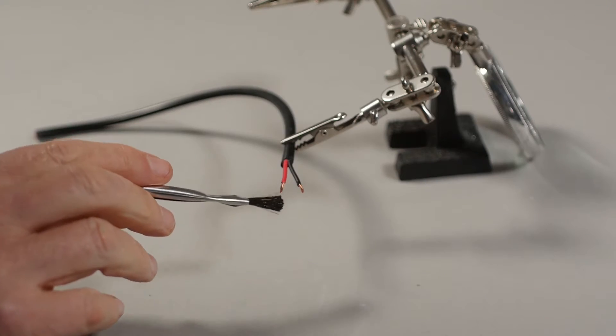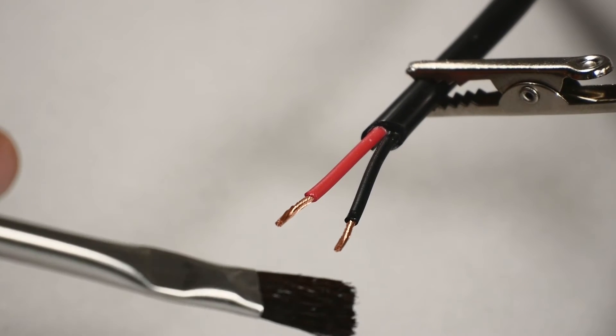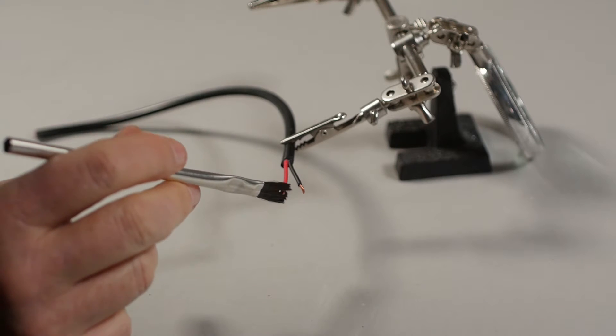Clean the two twisted conductor ends lightly with isopropyl alcohol, trying not to disturb the twisted configuration of the strands.